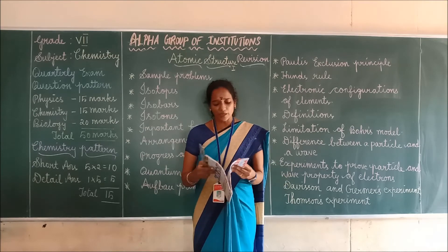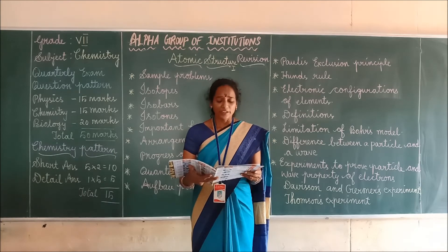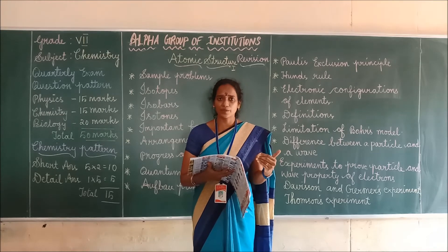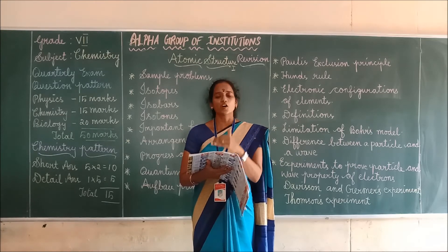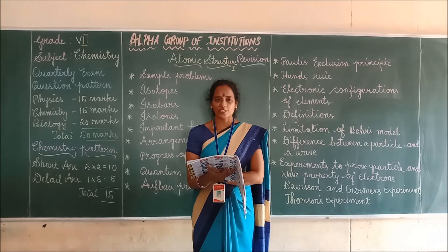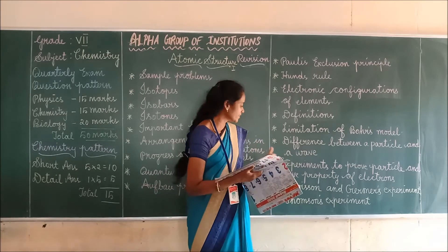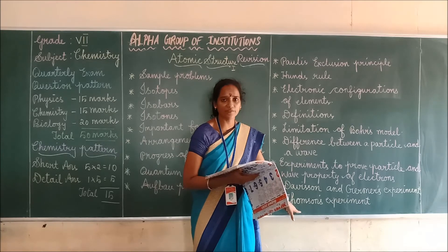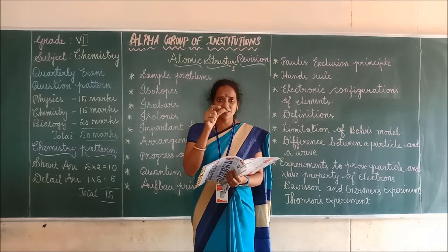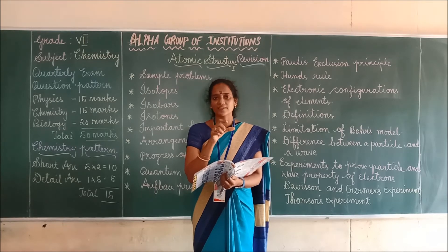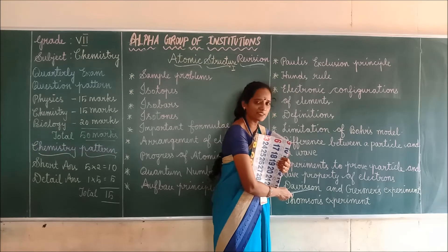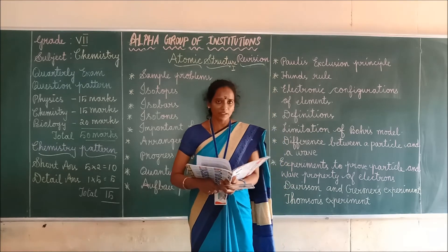Come to page number 8 — difference between a particle and a wave. That is also a detailed answer only. The left side covers particle with 3 points and examples, and the right side covers wave with 3 points; learn everything with examples. Next, experiments to prove particle and wave property of electrons — Davison and Germer's experiment and Thomson's experiment are given. Read both experiments and find out the concept; mention the concept at the end of your answer. If only one experiment is asked, no need to mention both — read the question twice and then write.